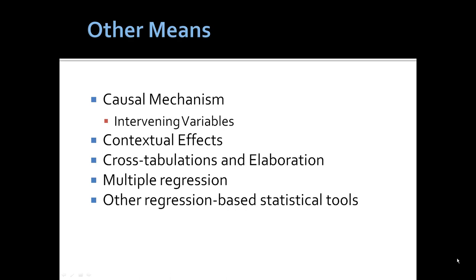Other ways of establishing causal relationships would be to look at the causal mechanism or intervening variables. You'll be dealing with this a great deal in SOCH 302 to look at contextual effects, to examine cross tabulations and elaboration. That is, looking at two variable tables and then introducing a third variable to examine the causal nexus. Or multiple regression and other regression based statistical tools such as path analysis. In SOCH 301 or Introduction to Research Methods, we will really be dealing up to descriptive data analysis.